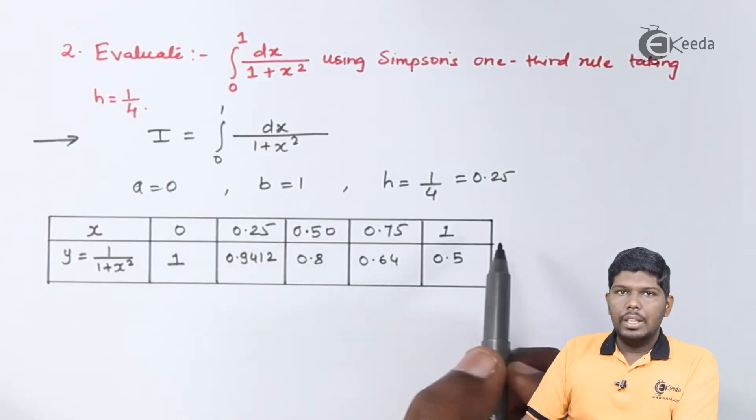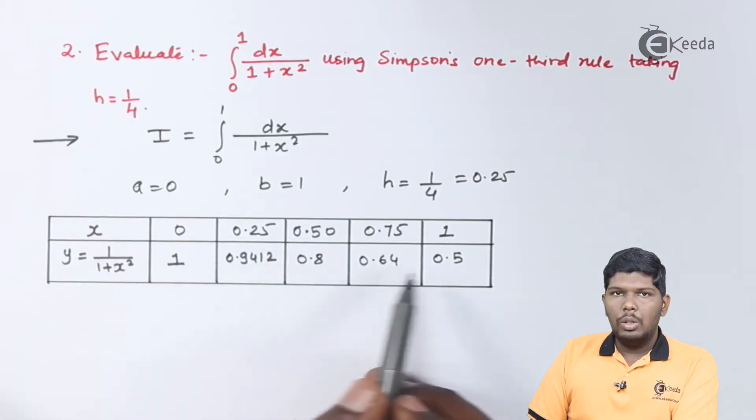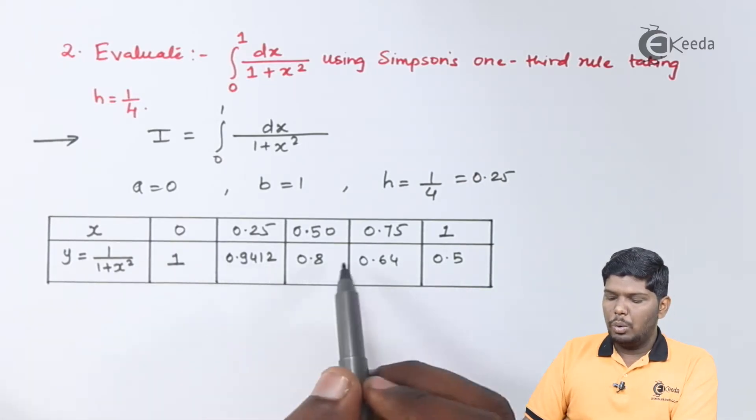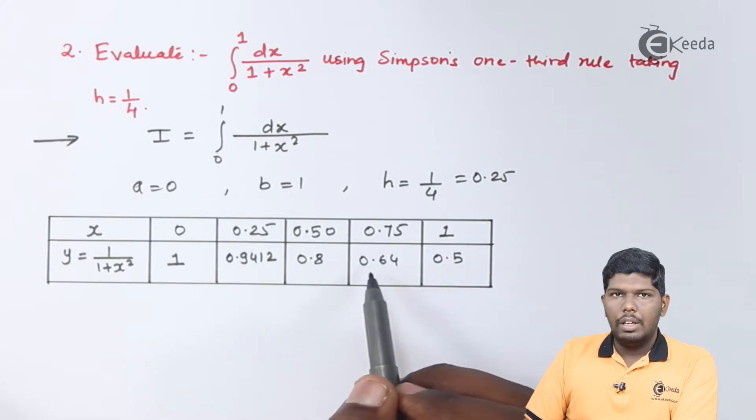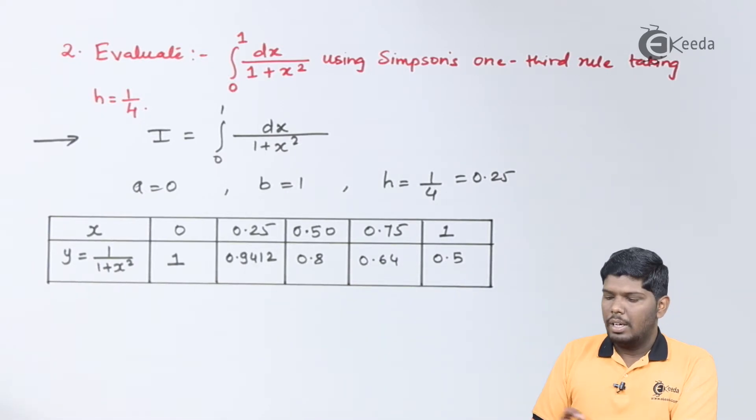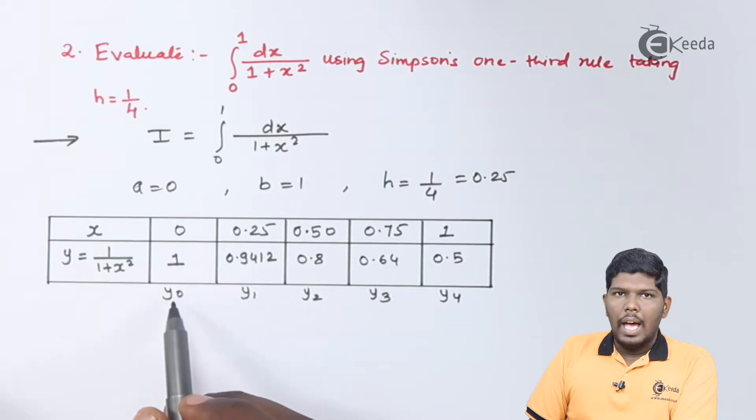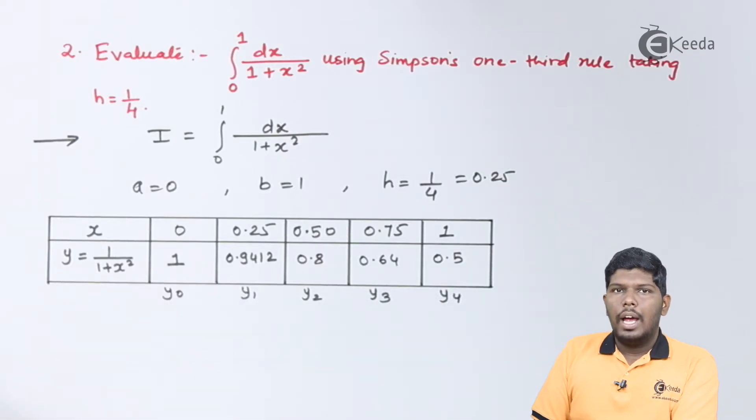So after substituting these values of x in the given function 1 upon 1 plus x square, the values are 1, 0.9412, then 0.8, followed by 0.64, and finally 0.5. After that we can consider these values as y0, y1, y2, y3 and y4 and we can use the Simpson's one-third formula.